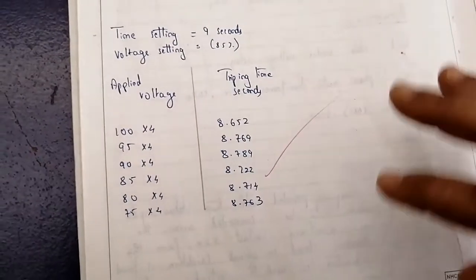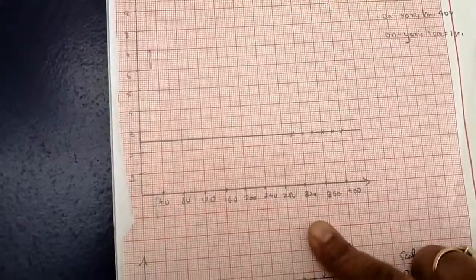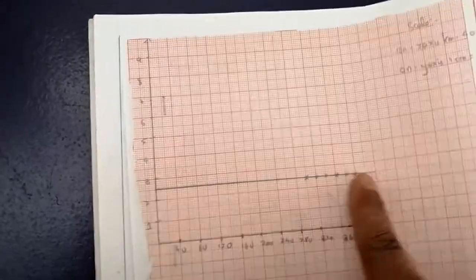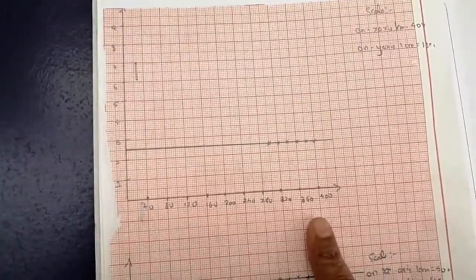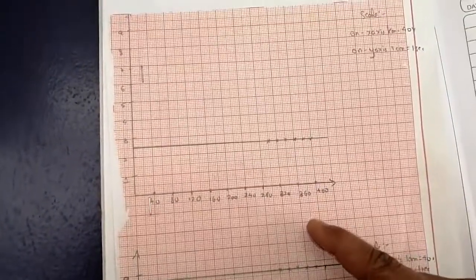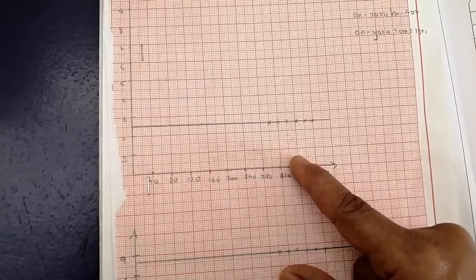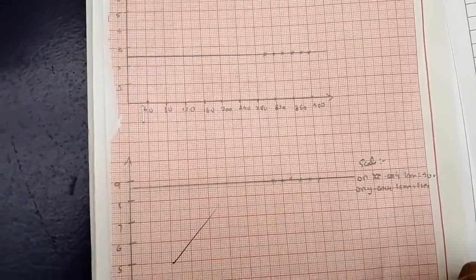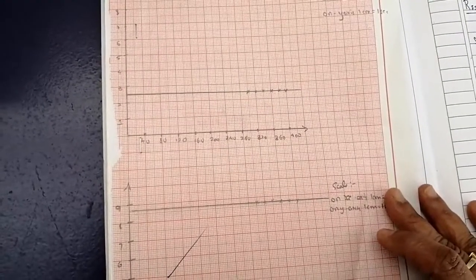Now let us look at the model graph. You can observe the model graph with two axes: the X-axis is the applied voltage and the Y-axis is the time taken. The graph is almost a straight horizontal line — almost constant. This indicates that whatever is the value of the fault voltage, the time taken by the relay is almost constant. We have satisfied our aim — we have plotted the DMT characteristics of the solid state relay, tabulated the values, and observed that the characteristic is almost constant. This concludes the experiment of the solid state under voltage relay.